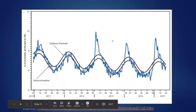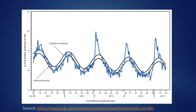The solid black bottom line is the seasonal baseline — the endemic level of flu we'd expect each year, showing seasonality with more cases in winter and spring. The upper black line is the epidemic threshold, likely one or two standard deviations above the baseline. When the blue line of actual case counts crosses that upper black line, an epidemic has occurred. This figure illustrates that over this time period, four out of five years crossed the epidemic threshold — in 2011, 2013, 2014, and 2015.